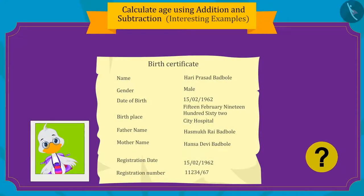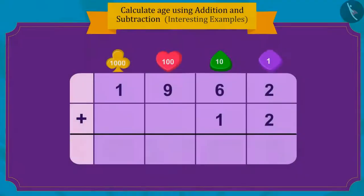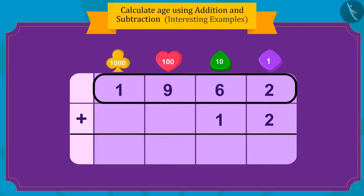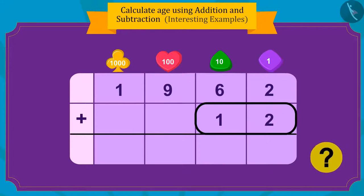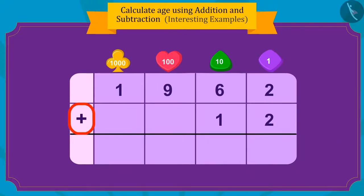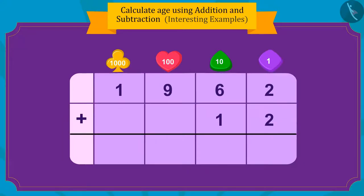Children, can you tell in which year uncle was 12 years old? If you want, you can pause the video and find the answer. Well done, kids — you have found the right answer! Uncle was born in 1962, so we need to add 12 to 1962. Uncle was 12 years old in the year 1974.